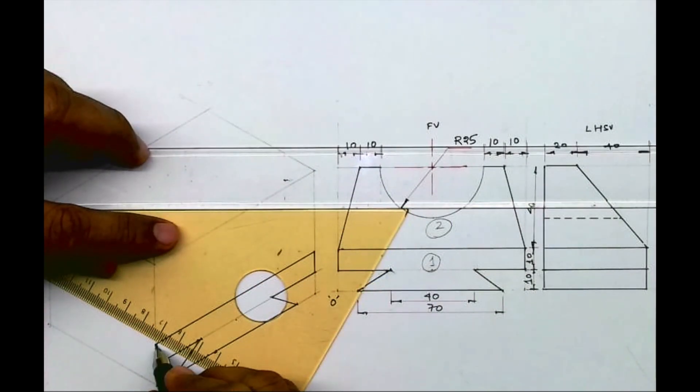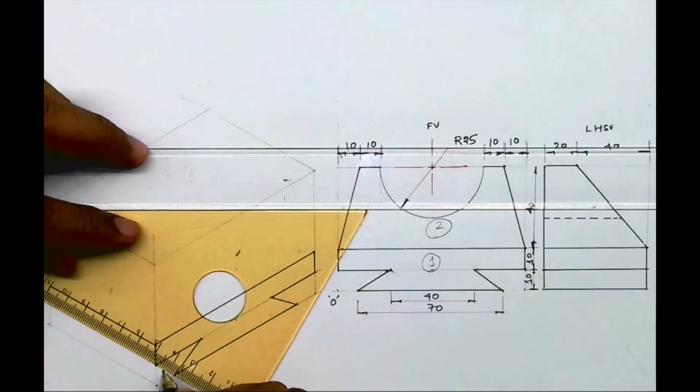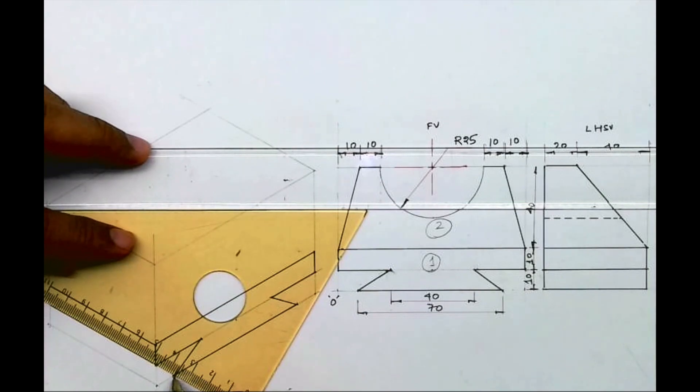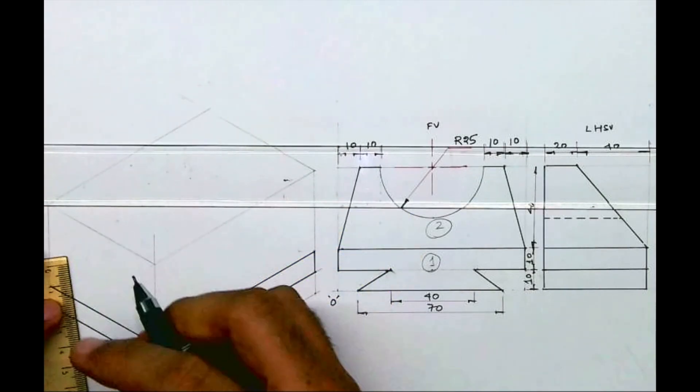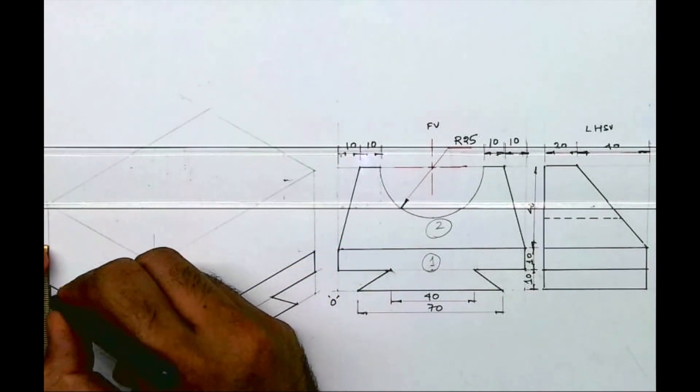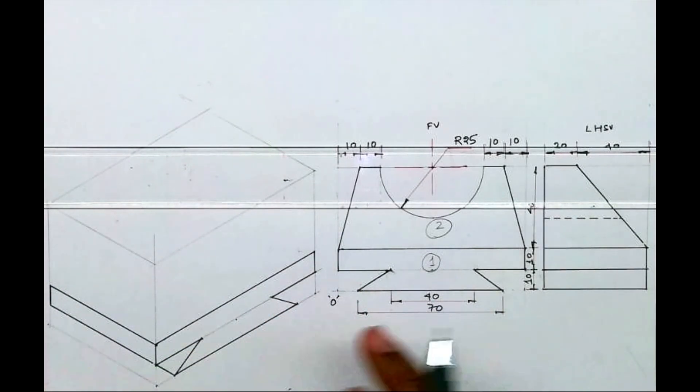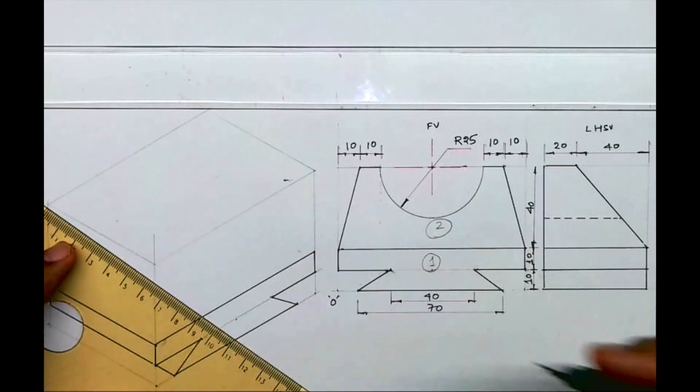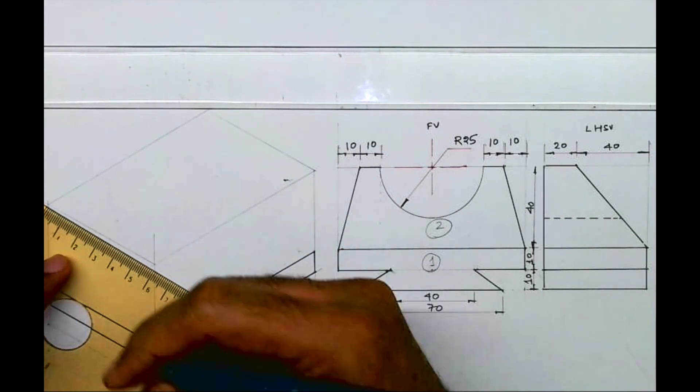So this is part one. I'll take this line behind by 60. This also will go behind by 60 and this will be done. Now part two. So for part two I need to take 20 and I need to draw the slope.